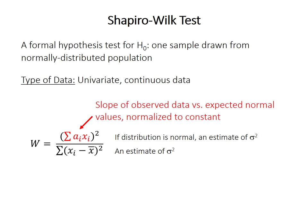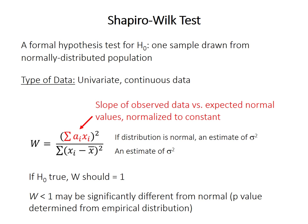W values less than 1 may indicate a significant difference from normality. But we also have to consider whether that difference is more than we might expect for a small random sample drawn from a population. The p-value is the probability of finding a W statistic at least as small as observed if the null hypothesis is true. Shapiro and Wilk actually calculated the p-values empirically by simulating a large number of normal distributions.